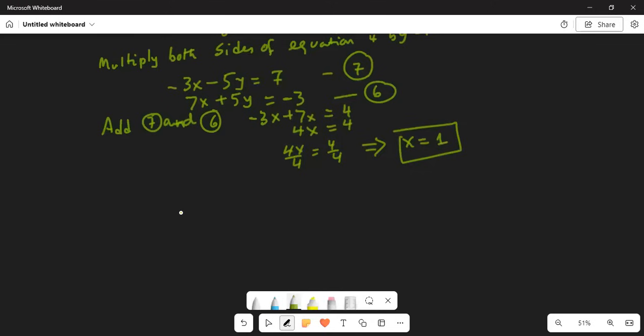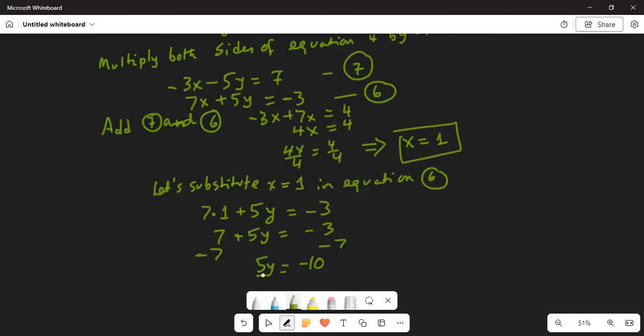Now substitute x equals 1 in equation 6. So 7 times 1 plus 5y equals minus 3. That's 7 plus 5y equals minus 3. Subtract 7 on both sides to get 5y equals minus 10. Divide by 5 on both sides, which gives y equals minus 2.